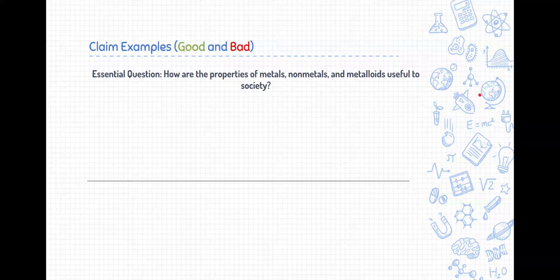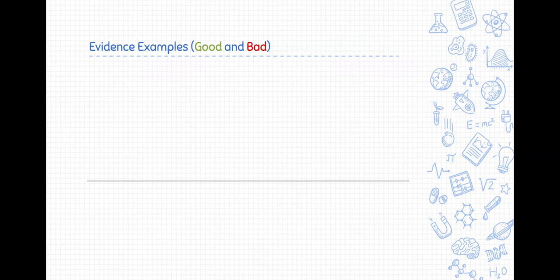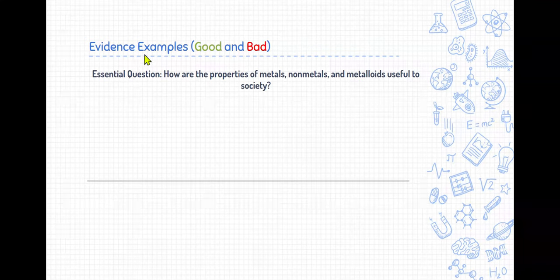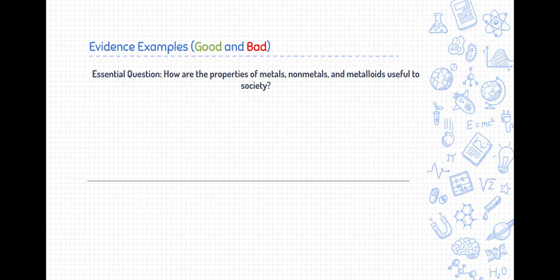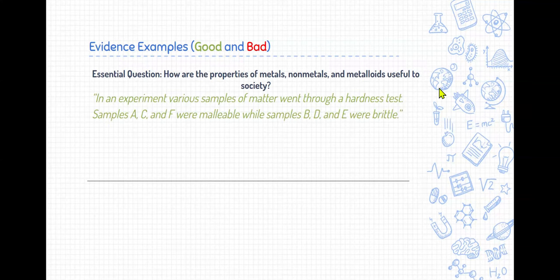Alright. So here is an example of evidence. Here's some examples of some evidence. Let's say again, here's an essential question. How are the properties of metals, non-metals and metalloids useful to society? So let's say we did an experience. We were exploring the properties of metals, non-metals and metalloids, and we wanted to know whether they were useful. So here's an example of evidence. Now, this was specifically collected in a lab.